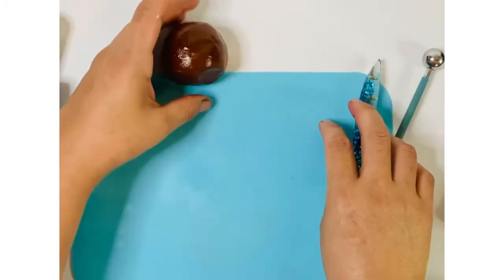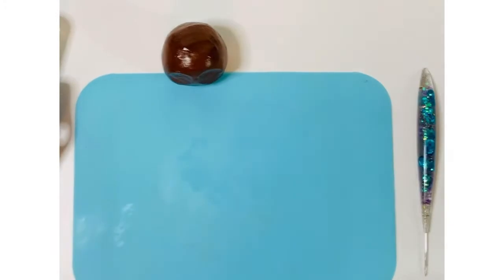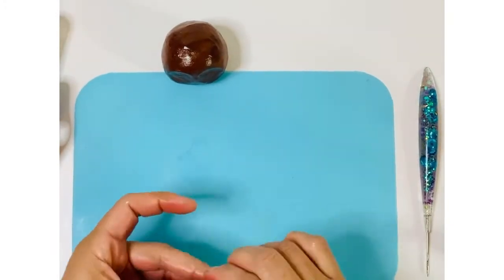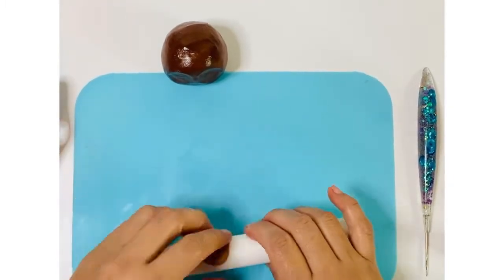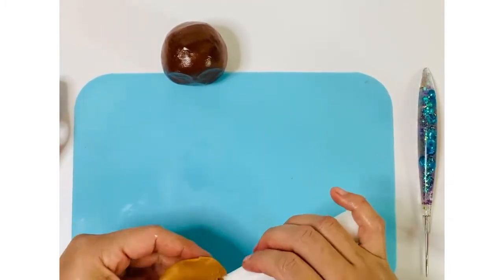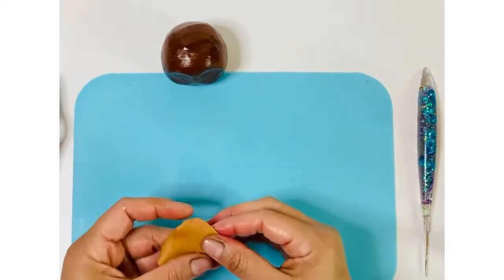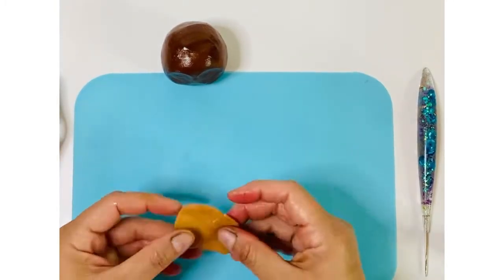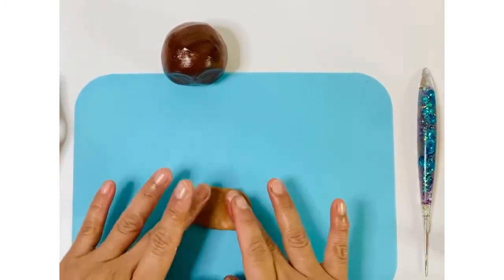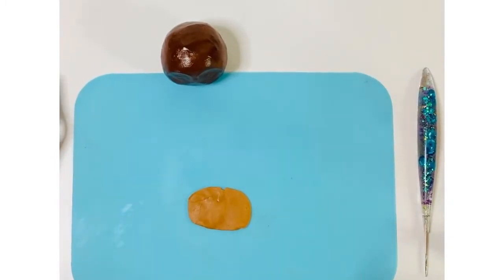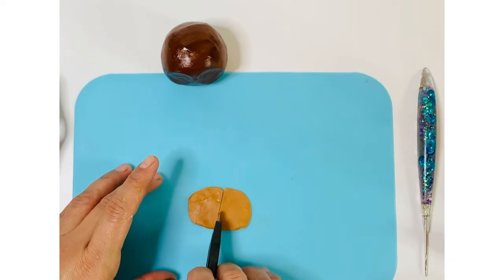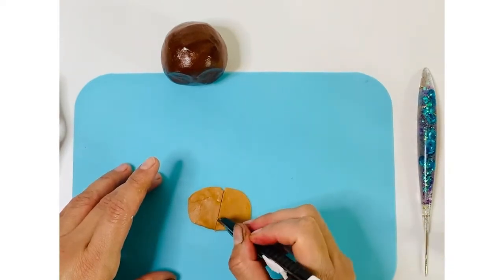And I keep, you're gonna see me fixing every minute almost the shape of my face because since it's modeling chocolate and with all the lights you get a little bit too soft. But if you have hot hands, you can put your piece in the fridge for a couple minutes so it gets cool enough to keep working.